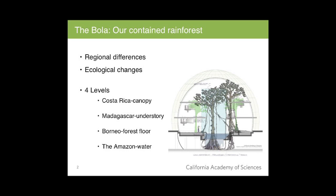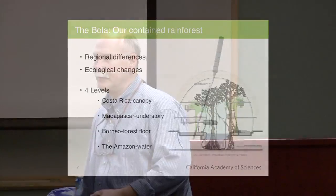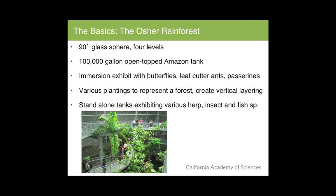The exhibit is set up with regional differences and ecological changes across four levels. You have the Amazon, which is the water level; the Borneo forest floor; Madagascar, which is the understory; and Costa Rica, which is the canopy. It's housed within a 90-foot glass sphere, featuring a 100,000-gallon open-topped Amazon tank with iconic giant Amazon fishes.